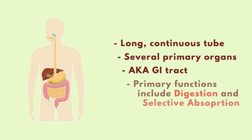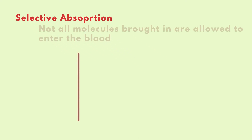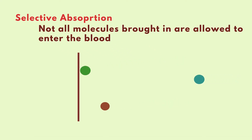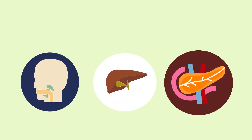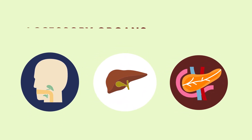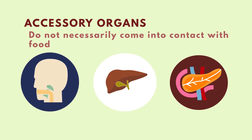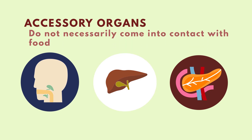The GI tract provides a space for digestion and allows for selective absorption of molecules into our bloodstream and lymph. Absorption is referred to as selective because not all we bring in is allowed to enter the bloodstream and lymph — the entry is tightly regulated. Along the way, the primary digestive organs are assisted by several accessory organs that may or may not come into direct contact with the food being digested and absorbed.